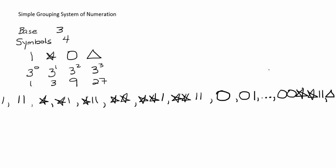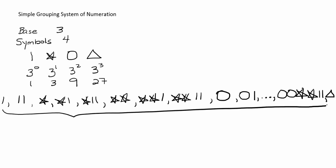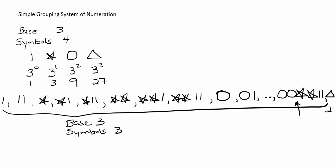One question you'll be asked is: given a base and a number of symbols, what is the largest value that can be represented? For instance, if we had a base of 3 but only 3 symbols — not 4 — we wouldn't be able to roll over to the triangle. So the highest value we could represent would be exactly 1 less than the value of the triangle, which is 27 (3 to the third power), meaning the answer is 26.